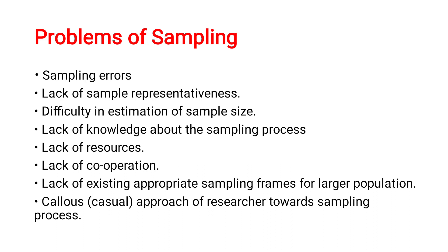Lack of sample representativeness: a sample should represent the general population of the study. For example, if you are doing a study on hypertension, the samples you select from the population should also have hypertension. If you select subjects with some other condition, they will not represent the population and you cannot generalize the findings. This is called lack of sample representativeness.